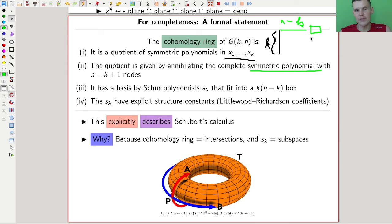It's an explicit description of the cohomology ring, in general, for n and k. So symmetric polynomials, complete symmetric polynomials, easy to write down, very good, but you can do better.